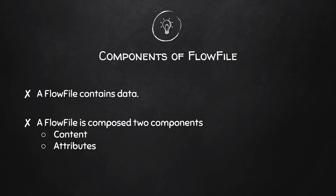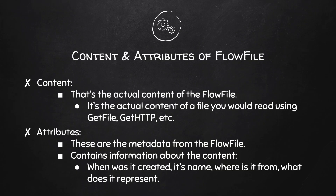A flow file is data. It's composed of two components: content and attributes. Content is the actual data itself. Attributes are key-value pairs which contain information about the content. These are the metadata of the flow file. This metadata can be creation date, file name, or where the data is from and what information it represents.